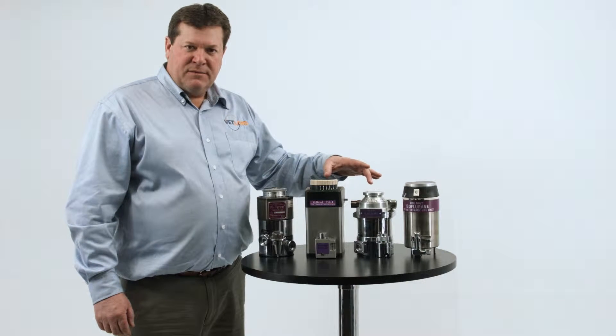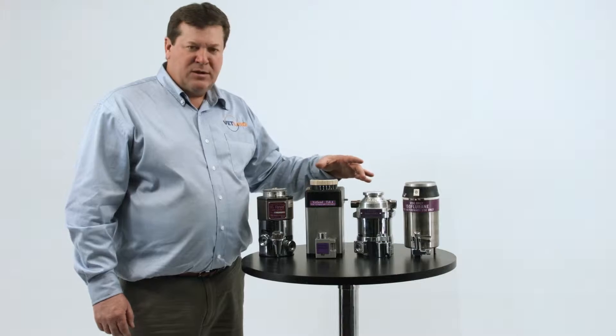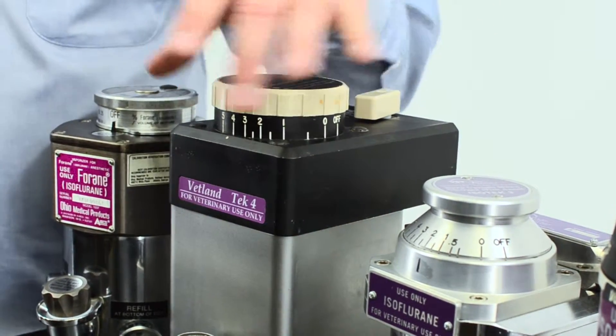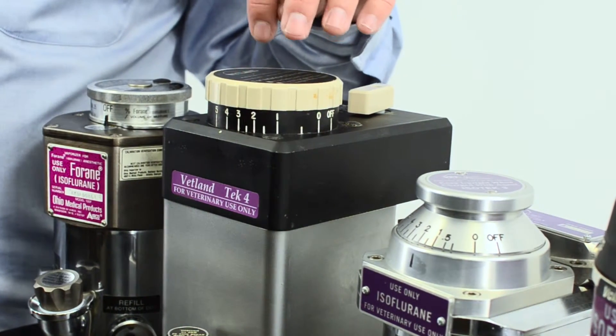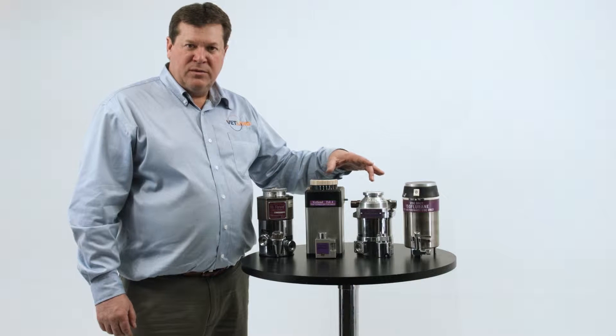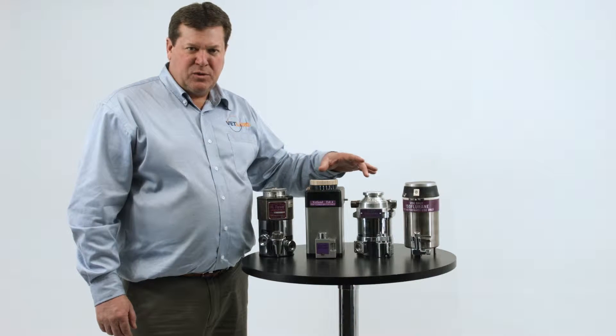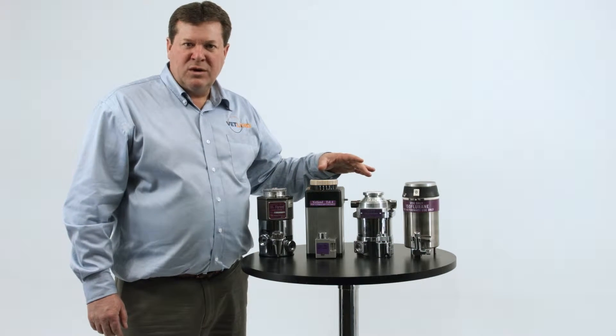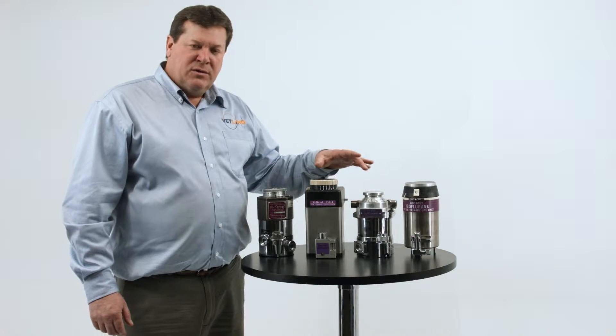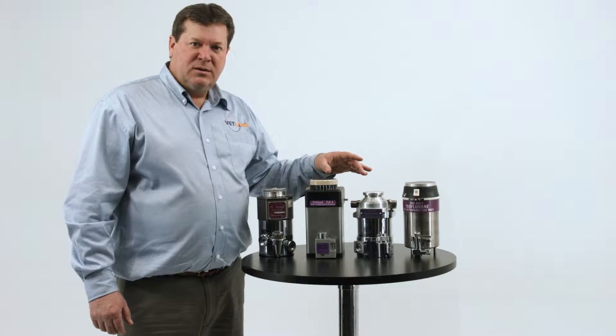The TEC-3 and the TEC-4 internally are basically the same components. The TEC-4 is more of a square shape and holds more volume of drug and it mounts differently, but internally these are both the same bi-metallic strip thermostats and a cotton wick fiber. These also need to be sent in every three years to be recalibrated and rebuilt.